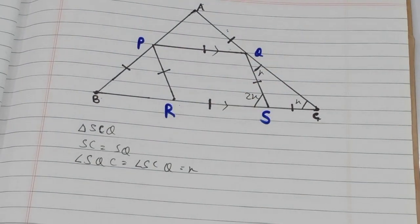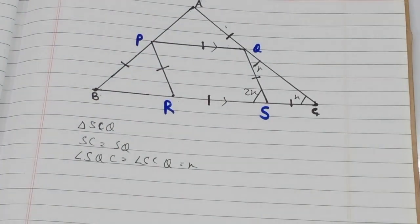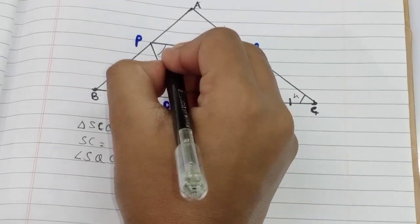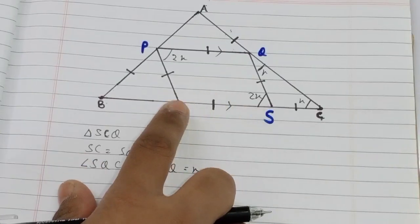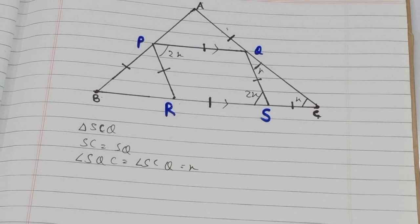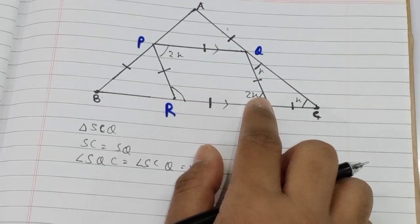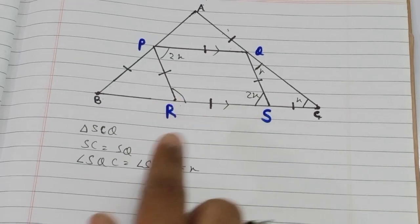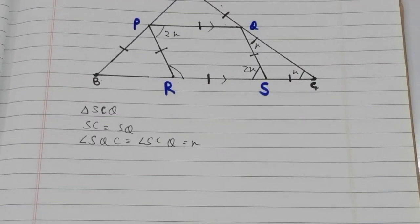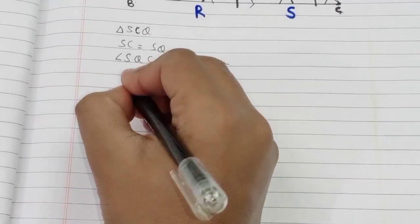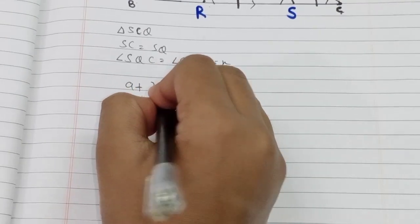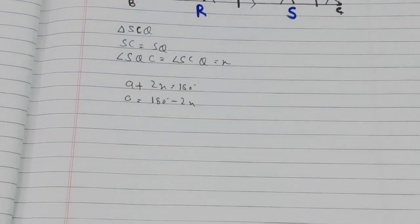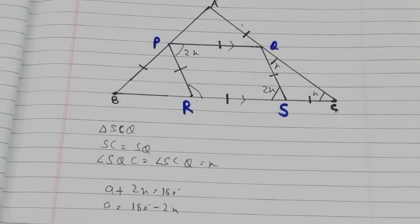Since all sides are equal, the opposite angles are also equal, so this angle is also 2x. Since PR is parallel to QS and RS is a transversal, the two co-interior angles are supplementary. Let's call this angle A, so A plus 2x equals 180 degrees, which gives us A equals 180 minus 2x.